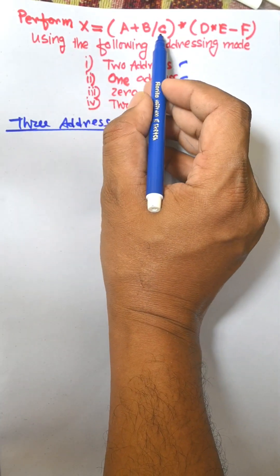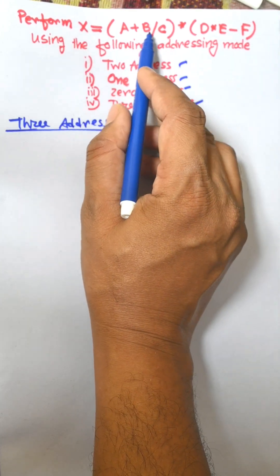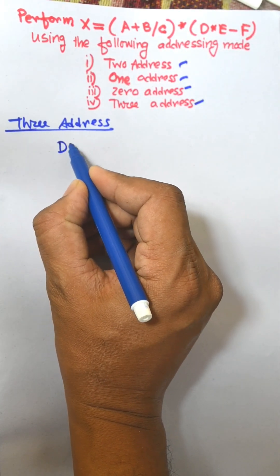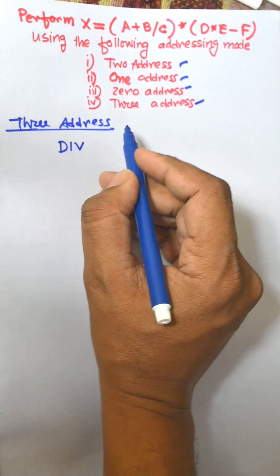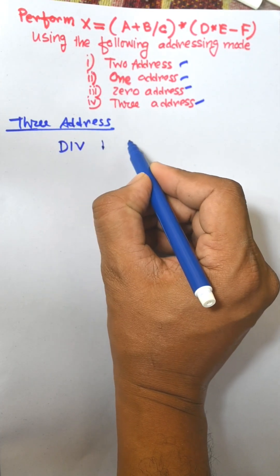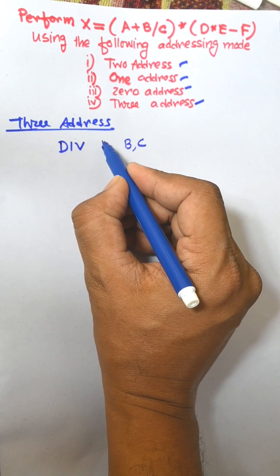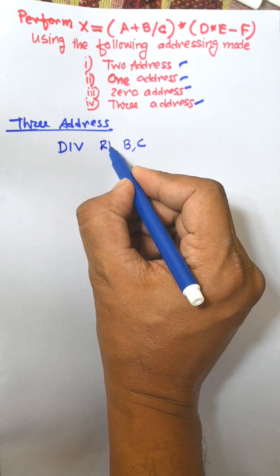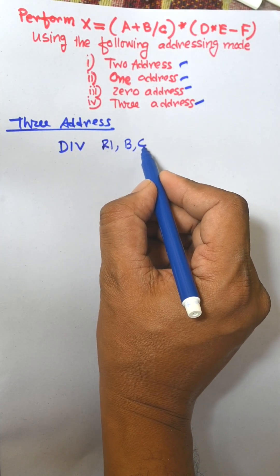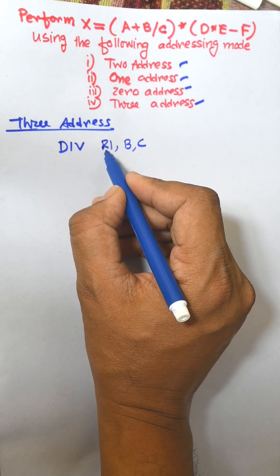The bracket has the highest priority, so the division operation will be performed first. Division R1, B, C: M of B and M of C are divided and the result is stored to R1.